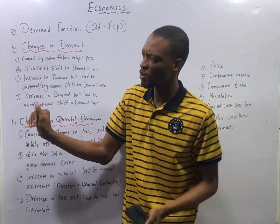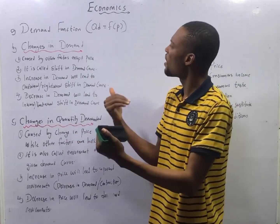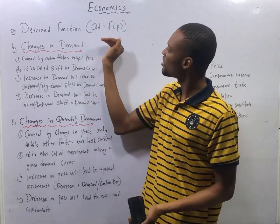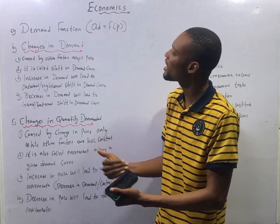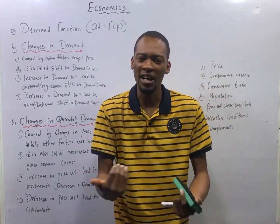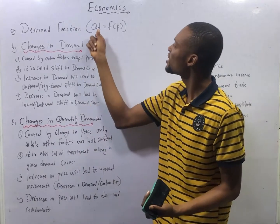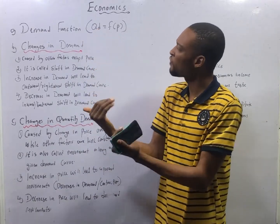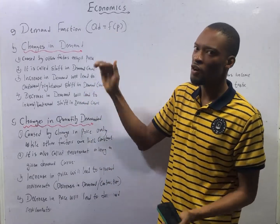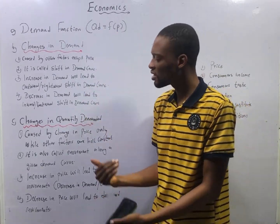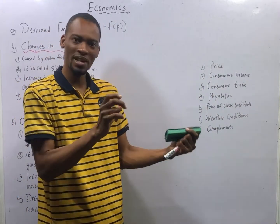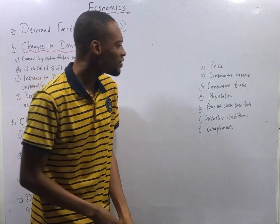Demand function shows the relationship between quantity demanded and price. It is a linear demand function because it shows a direct relationship between the quantity demanded and price. The demand function states that the quantity demanded is a function of price, which means the quantity of commodity you demand depends on the price.